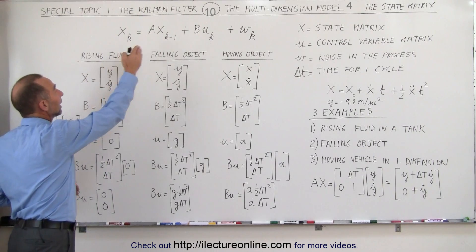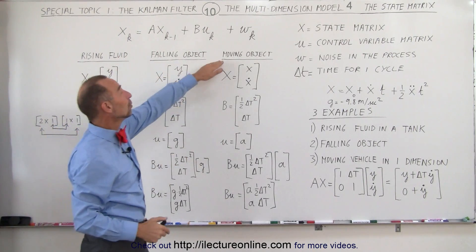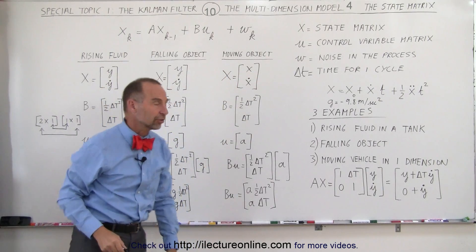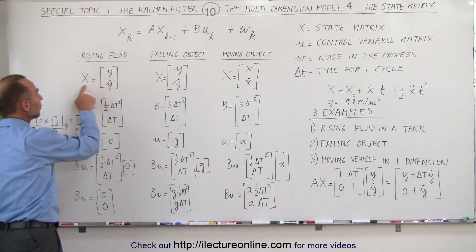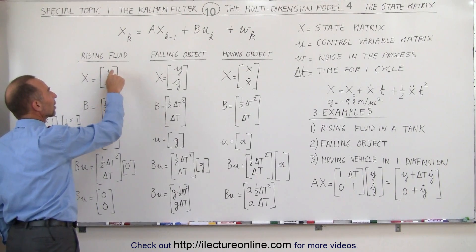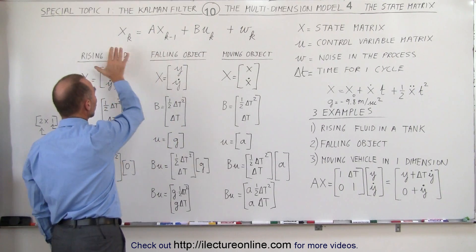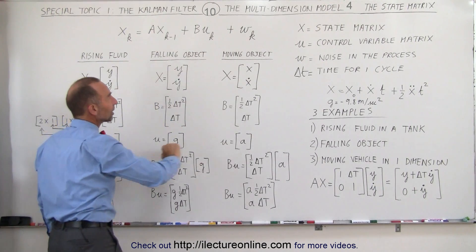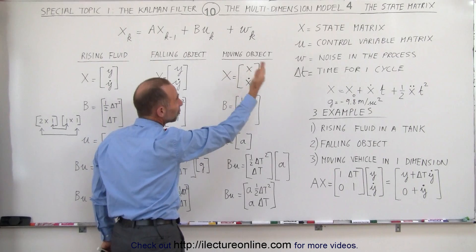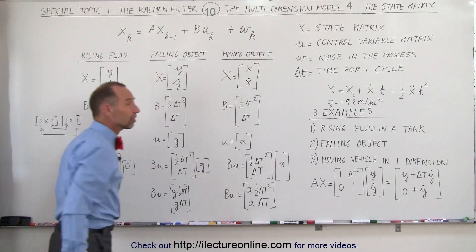Both the rising fluid and the falling object are motions in the y direction. We're assuming that the moving object is moving in the x direction. So the state variables x in this case will represent the position in the y direction and the velocity in the y direction for both the rising fluid and the falling object, and for the moving object, the position in the x direction and the velocity in the x direction.